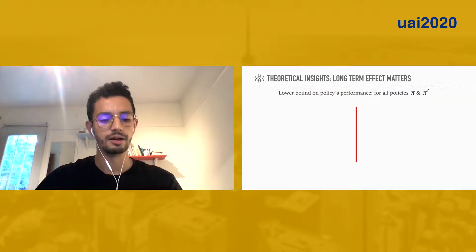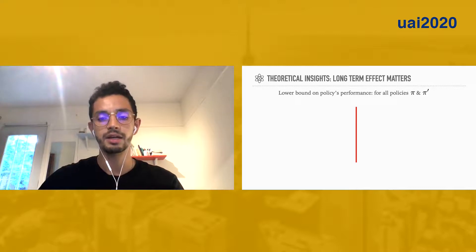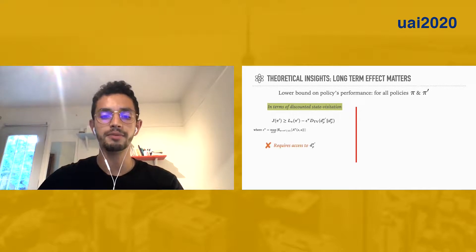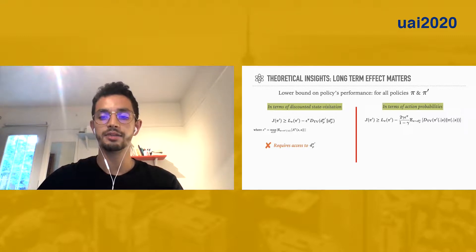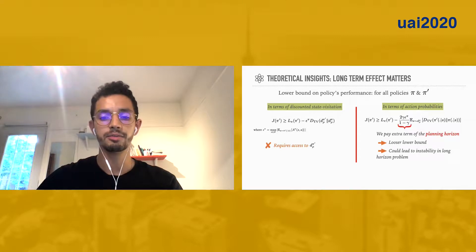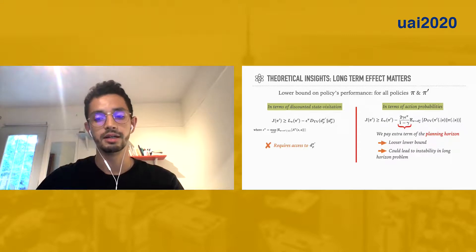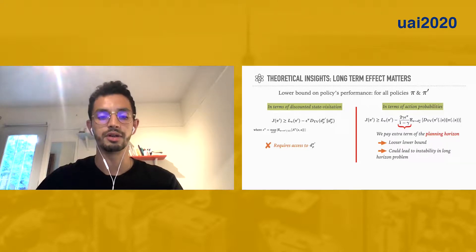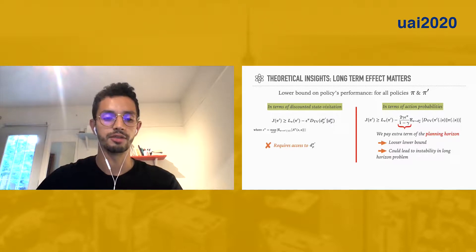This intuition can be formalized clearly. From the performance difference lemma, we can provide two lower bounds on policy performance. The first one involves the total variation distance between d-pi-prime and d-pi, but this lower bound is not tractable because it requires access to d-pi-prime. The second one involves the total variation distance between the two policies pi-prime and pi, and this lower bound is tractable, but we pay an extra term of the planning horizon, which leads to a looser lower bound. Ultimately, we are interested in optimizing the tighter lower bound, which is the first one, and we will show in this paper how to do this in a tractable way.